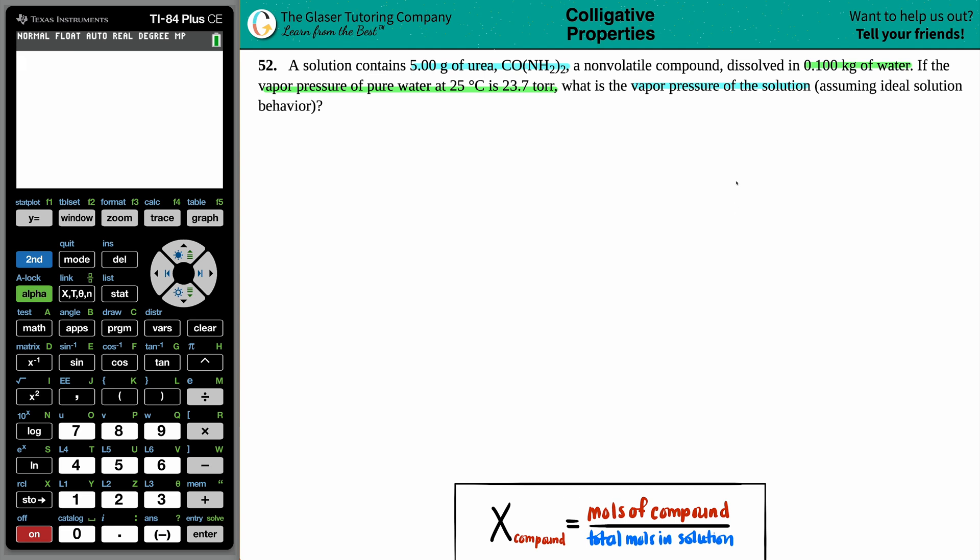Okay, so a lot to unpack here. They gave us that we're dealing with a solution, which means that we should have a solute and a solvent. So first let's identify which one is which. Now they did say that we had 5 grams of urea, which was dissolved into the water. Generally speaking, you will have a lower amount of your solute, which is always being dunked into your solvent. The solvent is generally the liquid substance that you're placing your solid in.